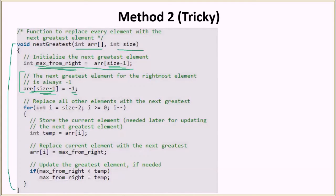Note that we have already saved the value of the last element in max-from-right. We have a for loop running from i equal to size minus two — the second last element — down to the first element. A temp variable holds the value of the current element being processed, and we replace it with the max-from-right value. Then we update max-from-right: if it is smaller than temp, we set it equal to temp.